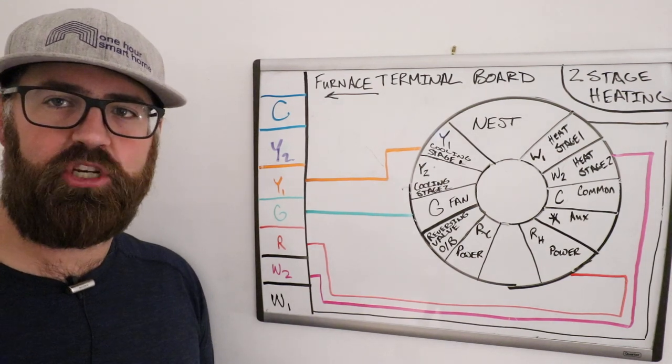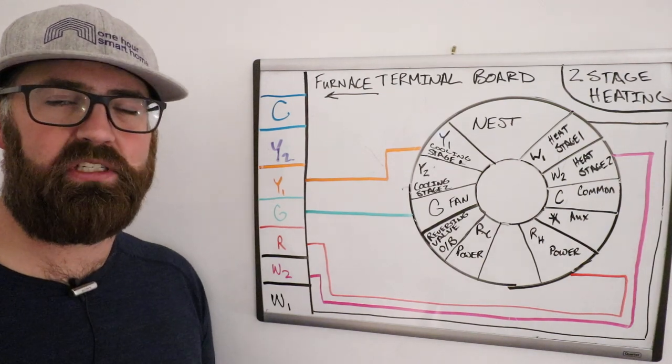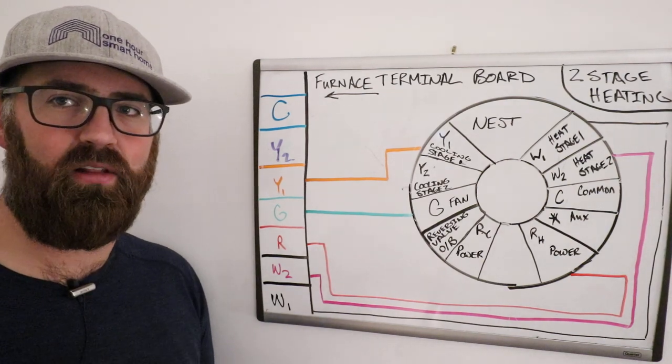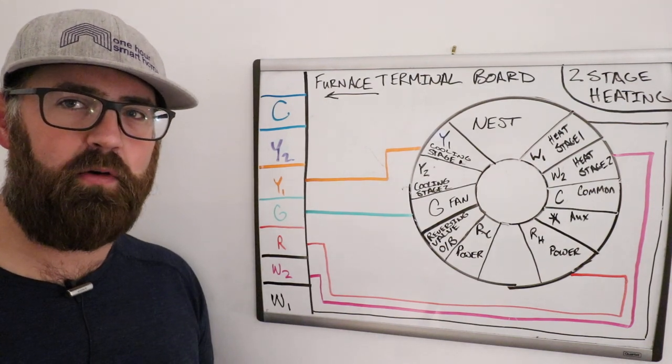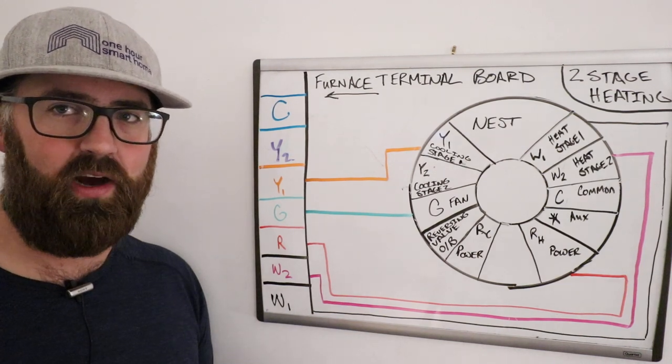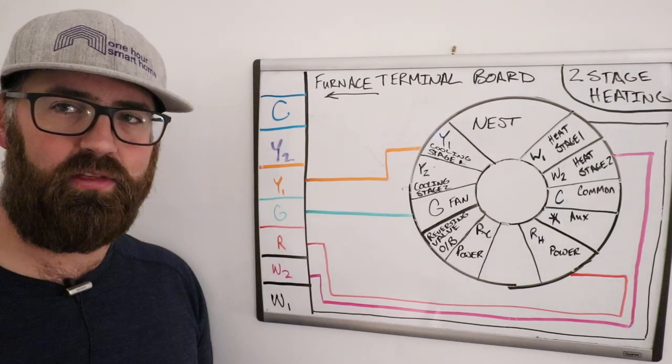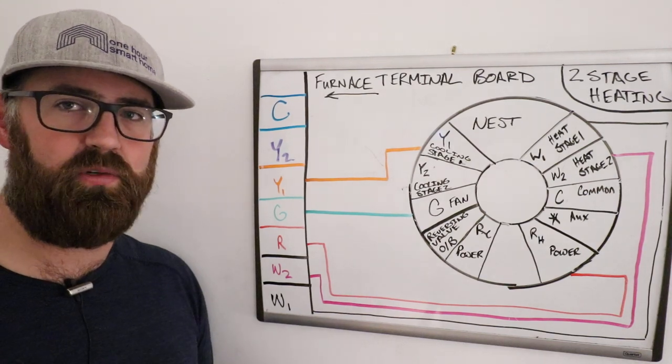If you've got two-stage heating, it's really simple to wire up a Nest thermostat. All two-stage heating is, is a high and low level for heating. So at one speed, your furnace is going to provide more heat and at the lower speed, it's going to provide less heat. And what this allows you to do is heat your house up faster if it's really cold.